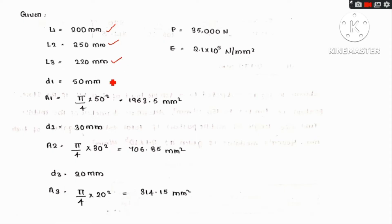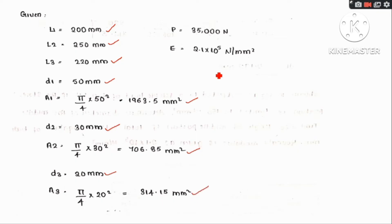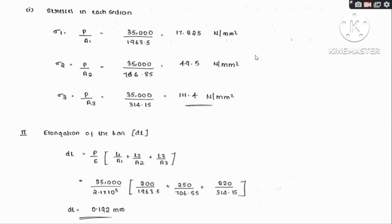Converting the diameters: d1 = 5 cm = 50 mm, corresponding area A1 = π/4 × 50² = 1963.5 mm². d2 = 3 cm = 30 mm, corresponding area A2 = 706.85 mm². d3 = 2 cm = 20 mm, corresponding area A3 = 314.15 mm². The load is 35,000 N and the modulus of elasticity is 2.1 × 10⁵ N per mm². Now we find the stresses in each section.